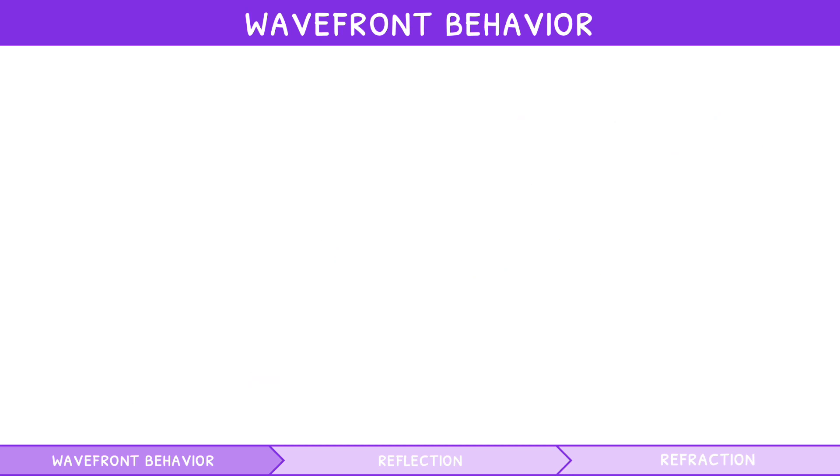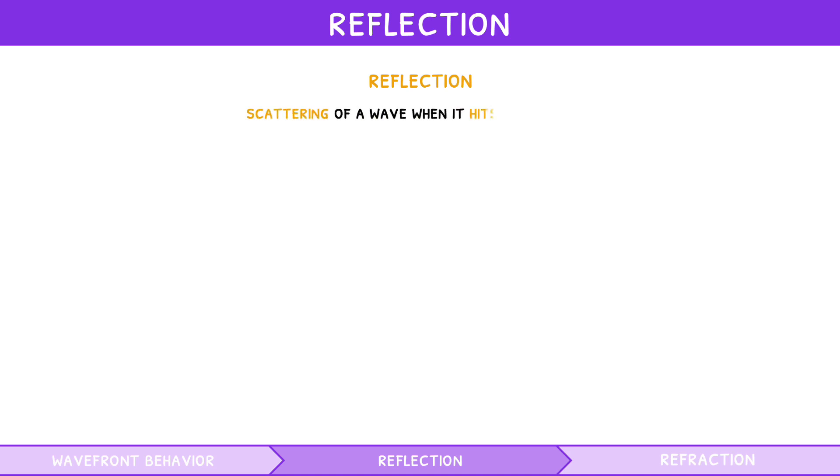Let's look at how this occurs, starting with reflection. Reflection is defined as the scattering of a wave when it hits the surface of a medium. This can occur in two ways: perfect reflection or diffuse reflection.